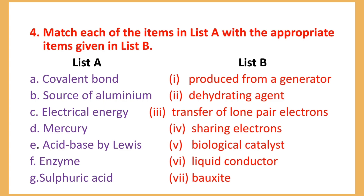Number D: Mercury — List number 6: liquid conductor. Number E: Acid-base by Lewis — List number 3: transfer of electrons.